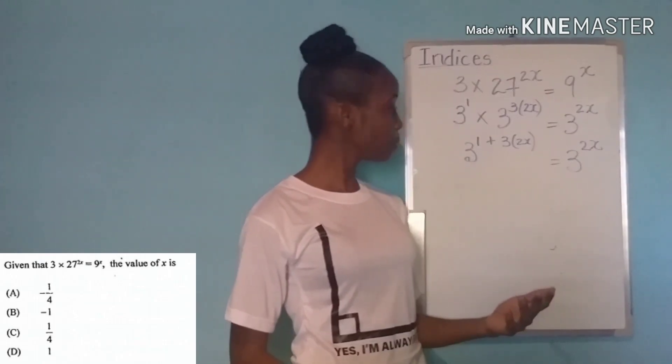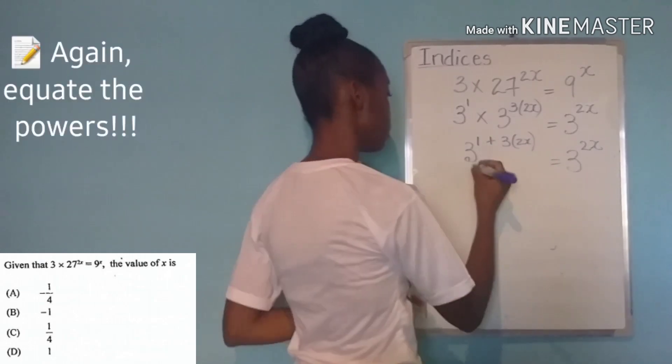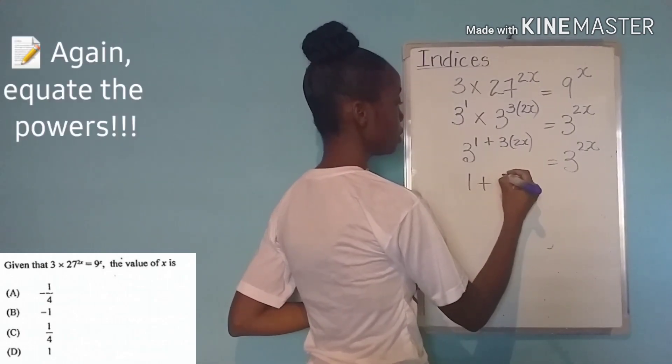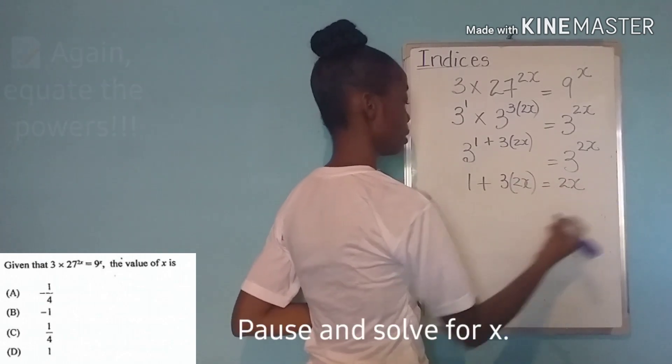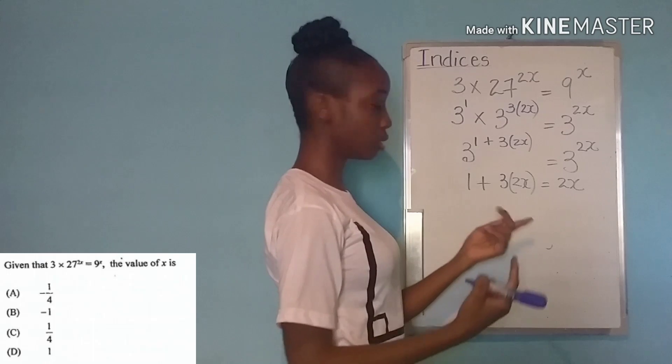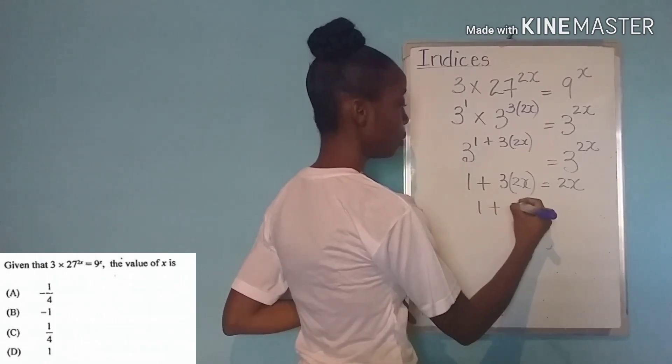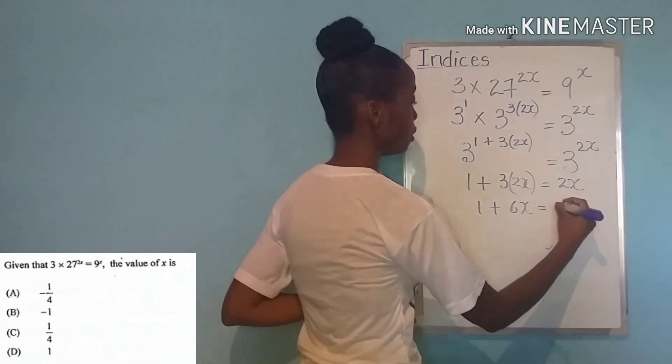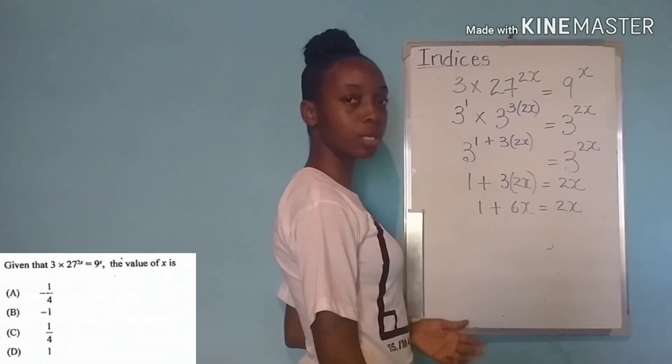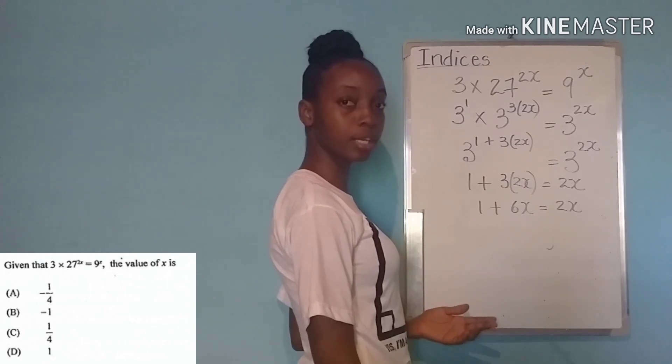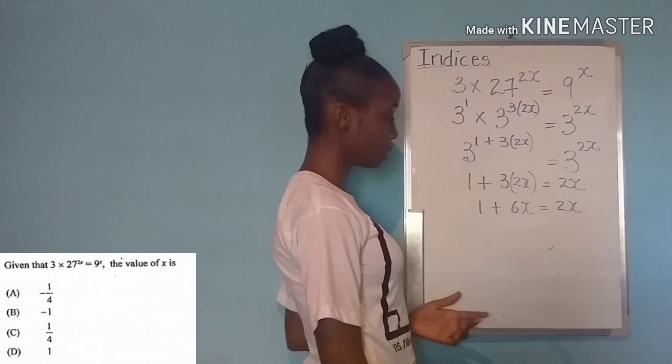What do we do at this point? Since our bases are the same then our powers are equal. So 1 plus 3 times 2x is equal to 2x. And we can continue to simplify this side. Since we are solving for x is going to be 1 plus 6x equals 2x. Still solving for x so we want to ensure that our x terms are on the same side and our constant stays by itself.